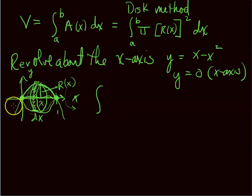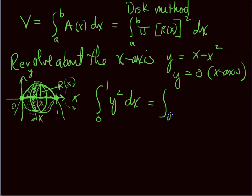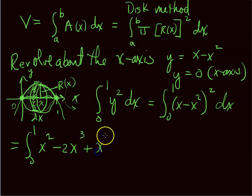The integral is from 0 to 1 of (x − x²)² dx. We could integrate with respect to y, but we'd have to do more work rewriting variables, so we change y into x. Squaring the binomial: x² − 2x³ + x⁴, dx.